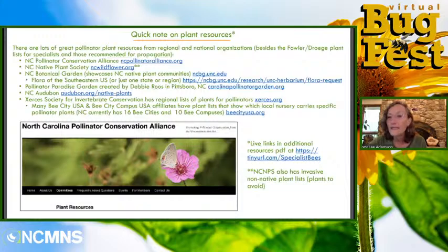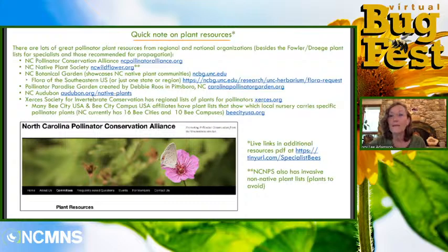I want to highlight some of the terrific plant resources available regionally and nationally. In North Carolina, the North Carolina Pollinator Conservation Alliance, NC Native Plant Society, NC Botanical Garden, and the Pollinator Paradise Garden that Debbie Roos has created in Pittsboro, and the NC Audubon all have excellent resources about native plants that support pollinators. The Xerces Society has lots of different plant lists, some for pollinators generally and others targeting monarchs. Many Bee City USA and Bee Campus USA affiliates have developed lists of pollinator plants that include local nursery sources.